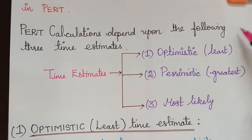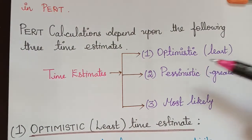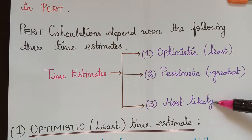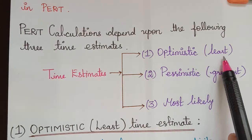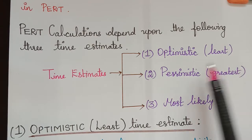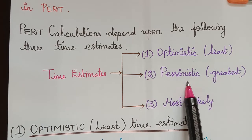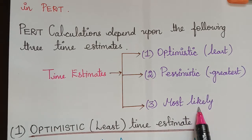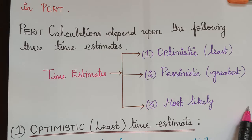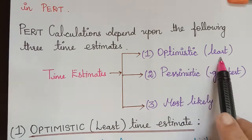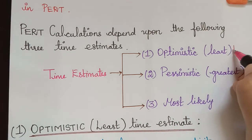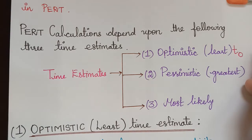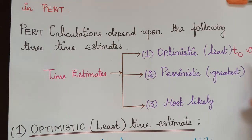The three time estimates are optimistic, pessimistic, and most likely time estimates. Optimistic time estimate is also known as least time estimate. This optimistic time estimate is represented as TO, and sometimes it may also be represented as the alphabet small 'a'.